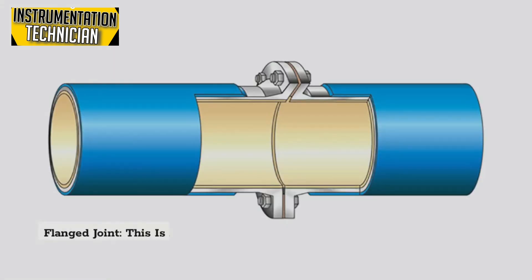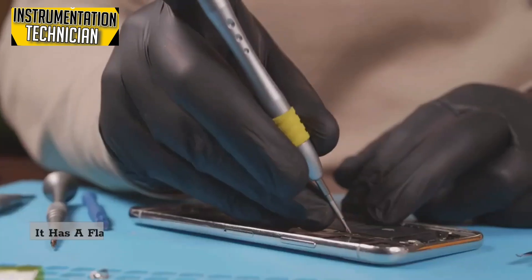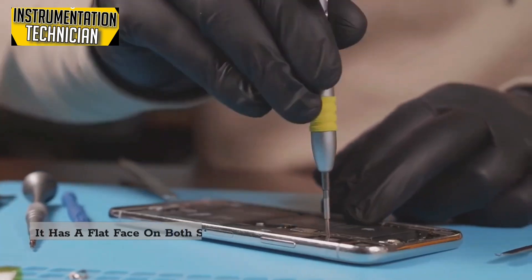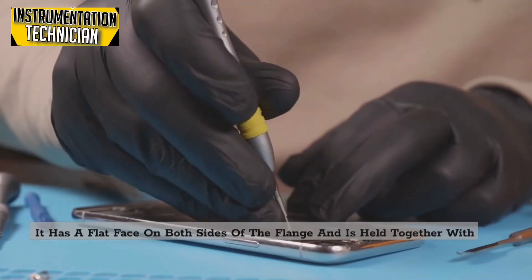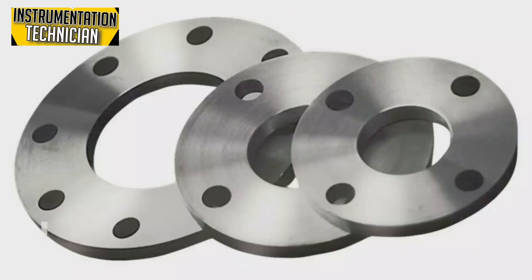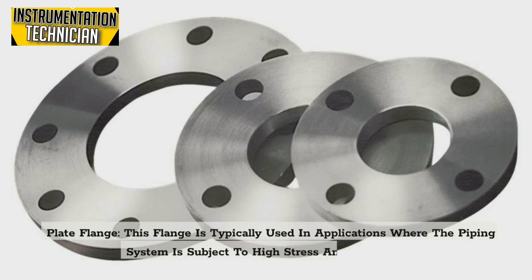Flange joint: This is a basic type of flange used to connect two pipes or fittings together. It has a flat face on both sides of the flange and is held together with bolts or studs. Plate flange: This flange is typically used in applications where the piping system is subject to high stress and vibration.